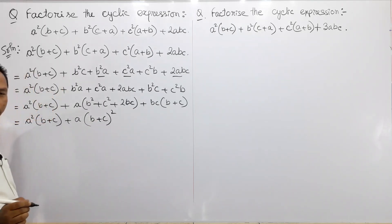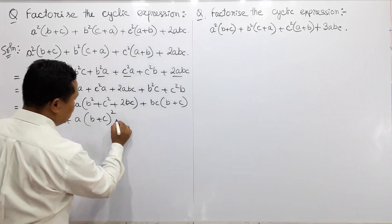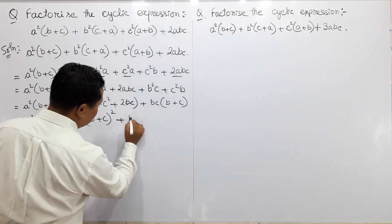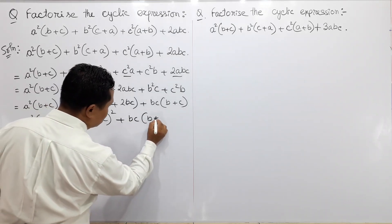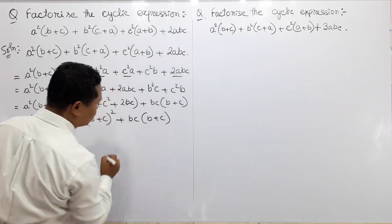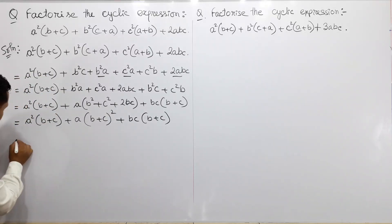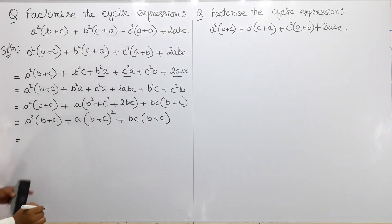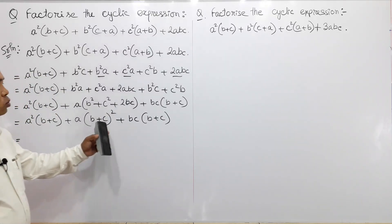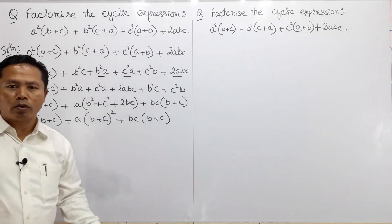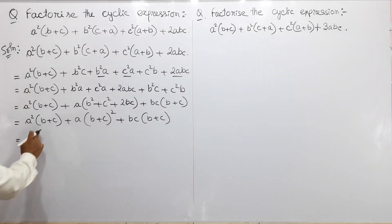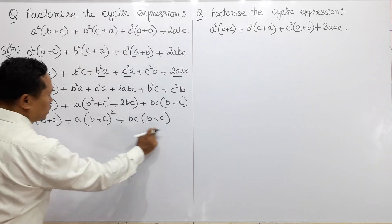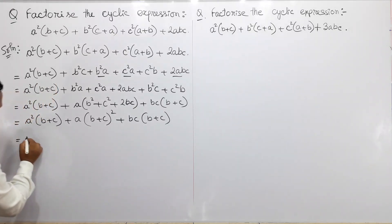This is B plus C whole square. That means, plus BC times B plus C. Now we have a two-step process. If we have B plus C, we know B plus C whole square.